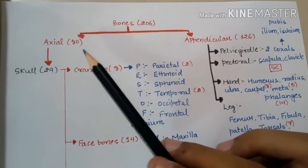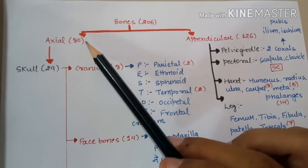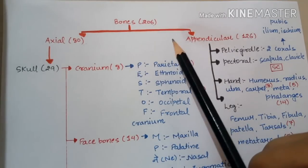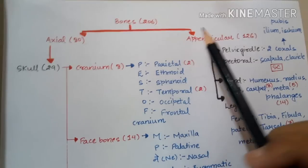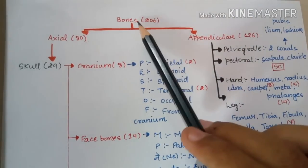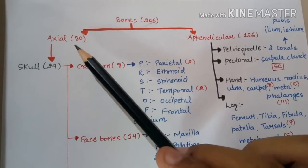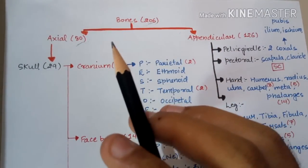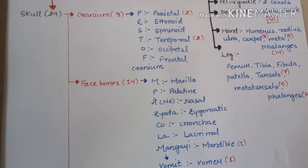There are 206 bones in our body, divided into two parts: axial skeleton and appendicular skeleton. The axial skeleton consists of the skull, vertebral column, ribs, and sternum. The appendicular skeleton consists of the pelvic girdle, pectoral girdle, hand, and leg bones. The axial skeleton contains 80 bones and the appendicular skeleton contains 126 bones.